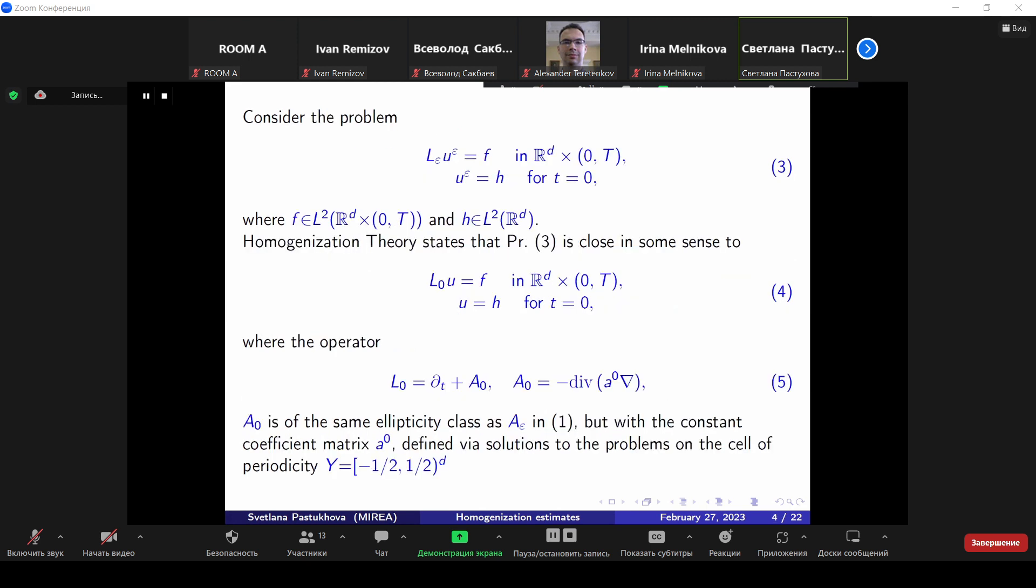When epsilon tends to zero, the coefficients of A epsilon are highly oscillating. Such type operators are the objects for consideration in homogenization theory. It is designed to find some homogenized operators which can replace these complicated ones. But these homogenized operators are much more simple.